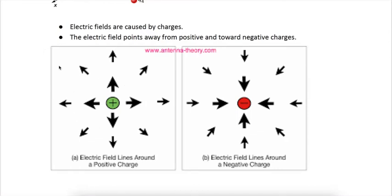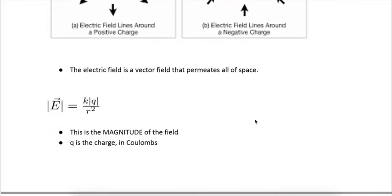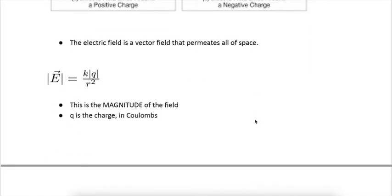But there are vectors everywhere in space. Right here, there's a vector pointing away from the charge. And as I go further away, those vectors will get smaller. If I have a negative charge, the vectors will point toward that charge. And the closer I get, the bigger they get.